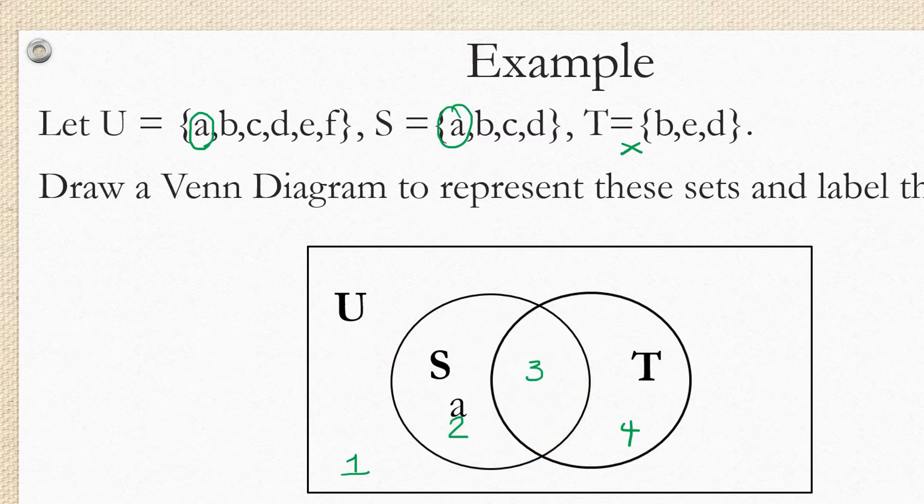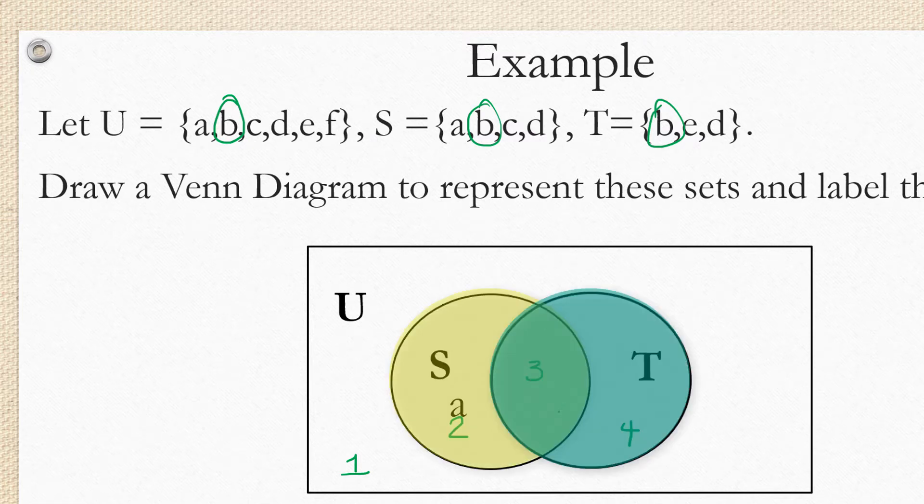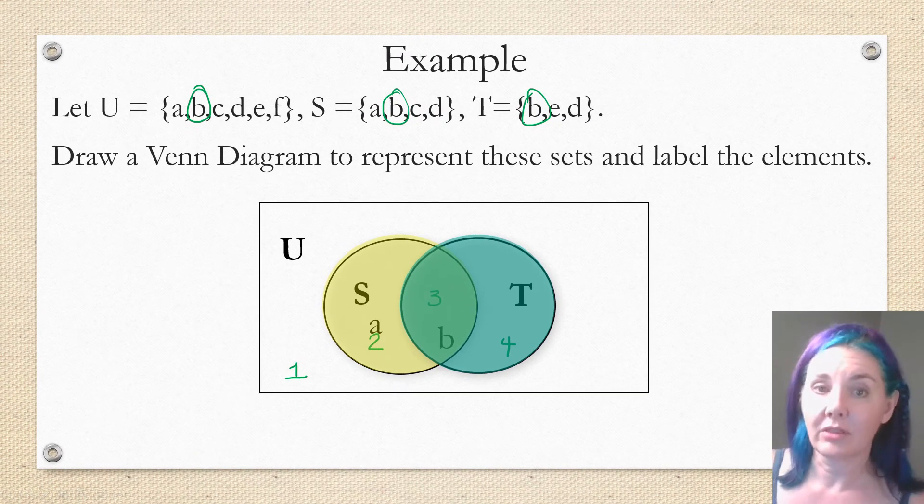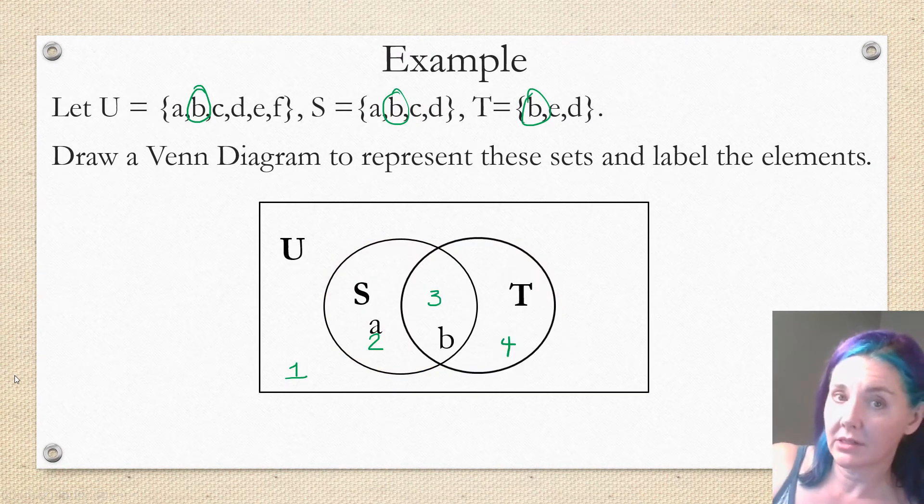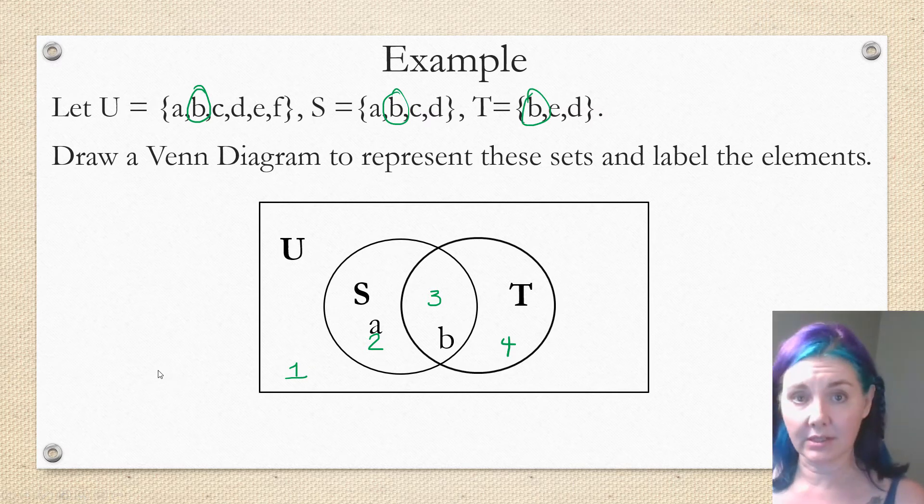Next, we're going to look at element B. Element B is in S and in T. So that means that it's in a region that's in both S and T. And what S and T have in common is region 3. So if we place the element B in region 3, it has both the characteristic of being in S and the characteristic of being in T.